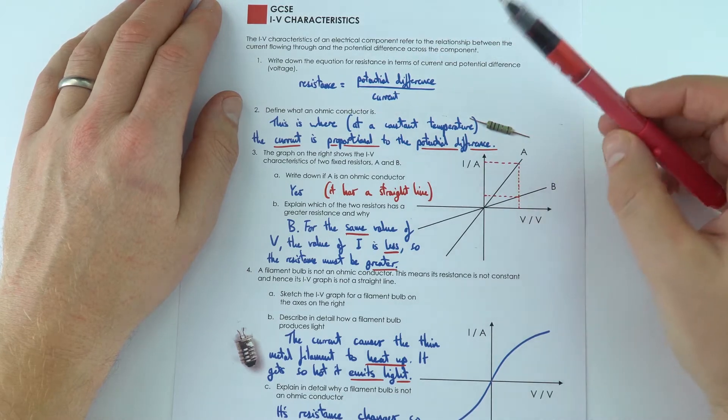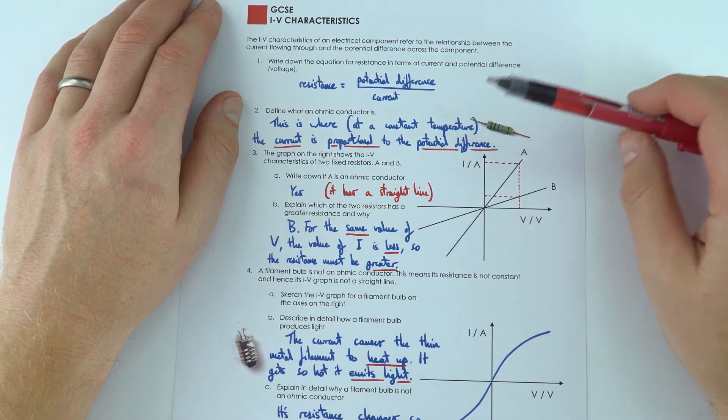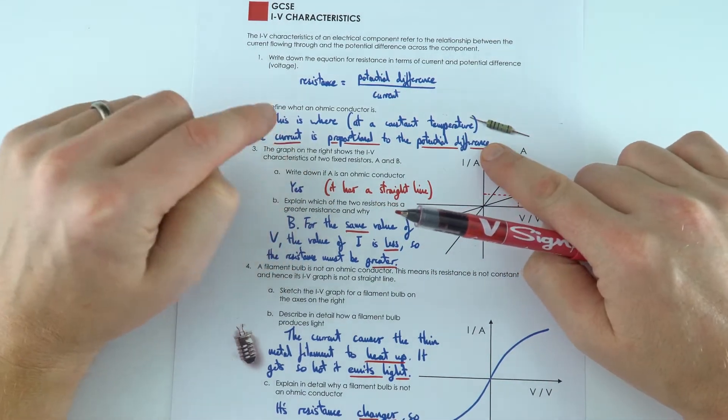So the first one we had, we looked at an ohmic conductor and this is where at constant temperature, the current is proportional to the potential difference. You double the potential difference, we double the current.